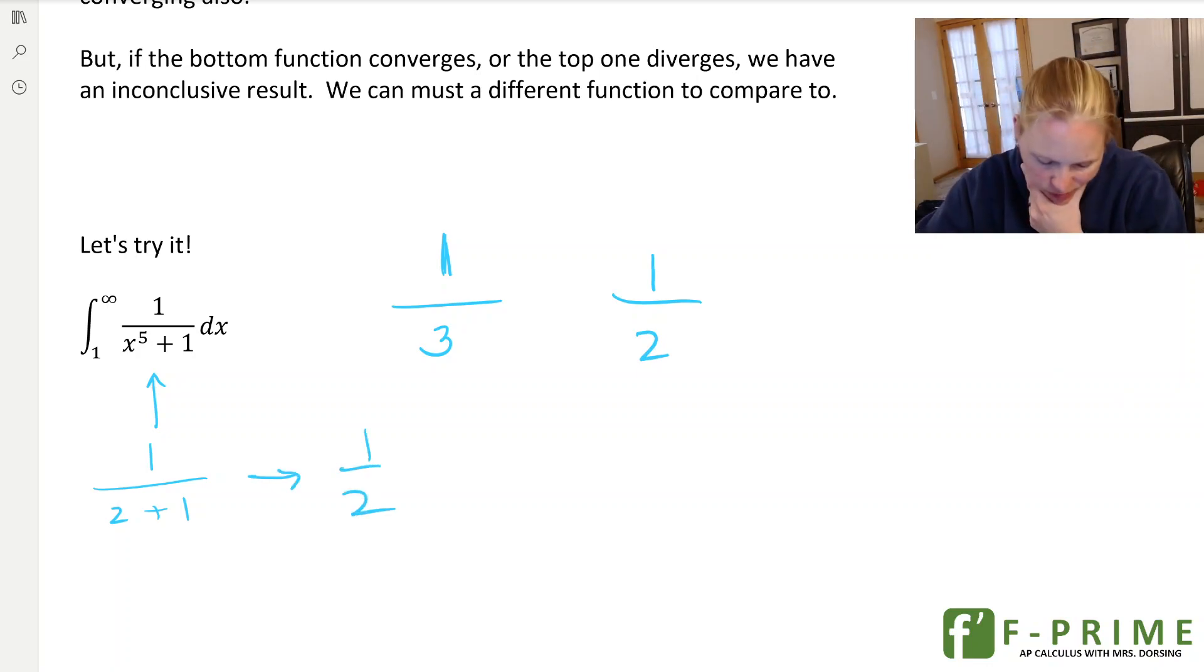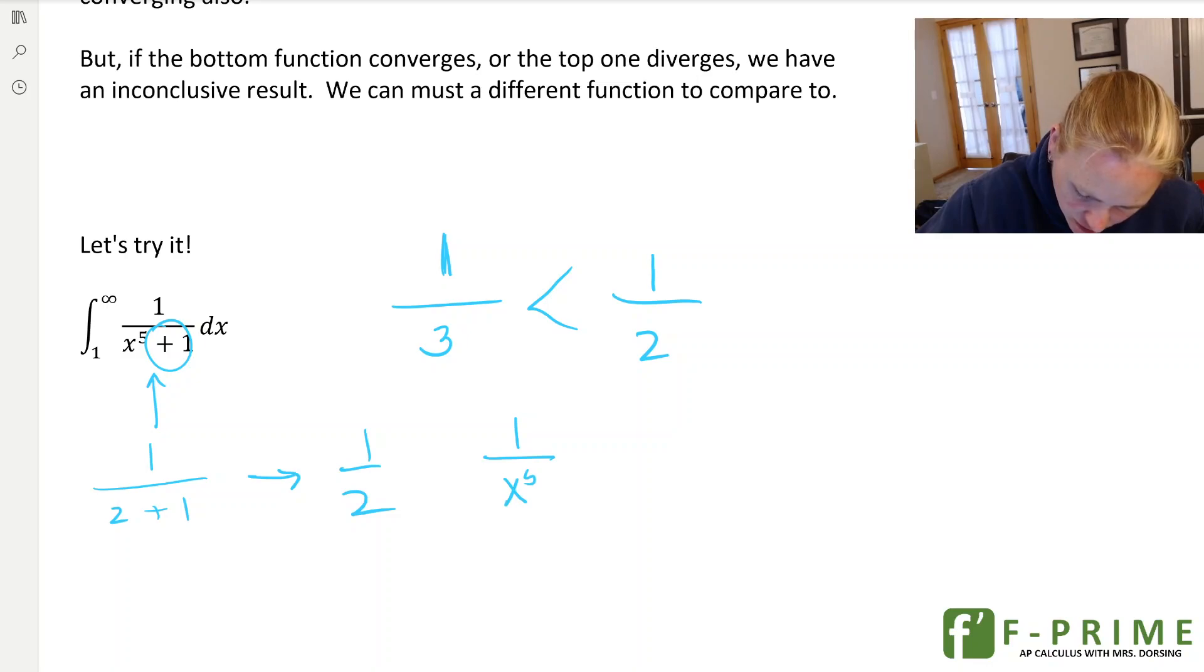So let's talk about these functions. So if I remove the plus 1, is 1 half bigger or smaller than 1 third? Well, it's bigger. So what we can do here is, if we remove the plus 1, if we make the denominator smaller, we get this other function, 1 over x to the 5th, and it ends up being bigger than 1 over x to the 5th plus 1. So what we've just done is we've said, okay.